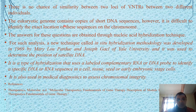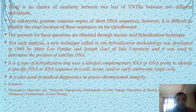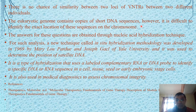The eukaryotic genome contains copies of short DNA sequences. However, it is difficult to identify the exact location of these sequences on the chromosomes. The eukaryotic chromosomes contain short copies of short DNA sequences — some as short tandem repeats and other forms — but it is very difficult to identify the exact location of these short tandem repeats within the chromosomes.